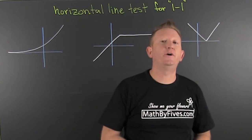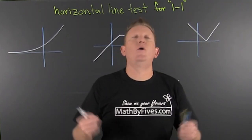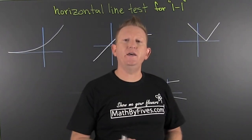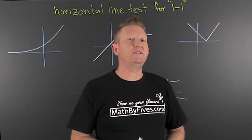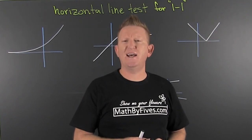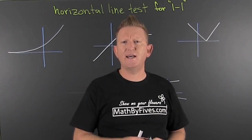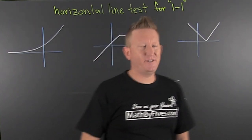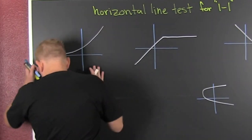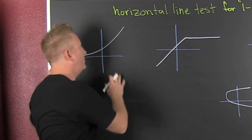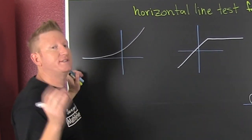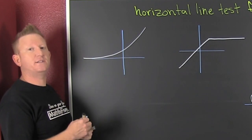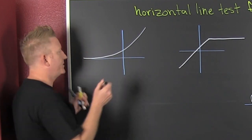So for each horizontal line I can draw, if it touches at most one spot, then it is a one-to-one function.